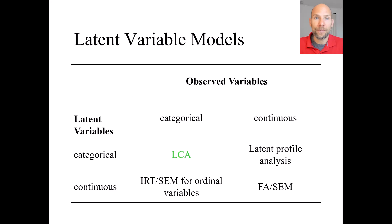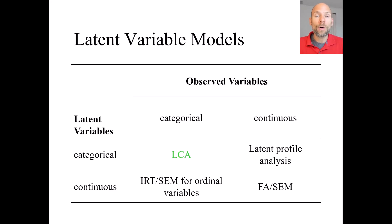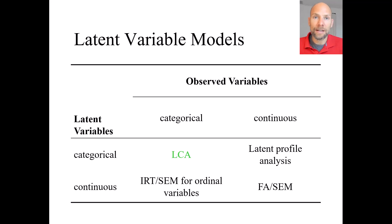The idea in latent profile analysis is the same as in classical LCA, but the indicator variables are continuous, so what is being modeled for the observed variables differs slightly. On the other hand, latent variable models with continuous latent variables include item response theory, which uses categorical binary or ordinal indicators, and structural equation modeling and factor analysis, which use continuous variables. LCA fits right into this set, and its characteristic feature is that the latent variables are categorical rather than continuous.